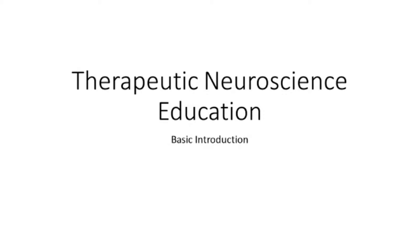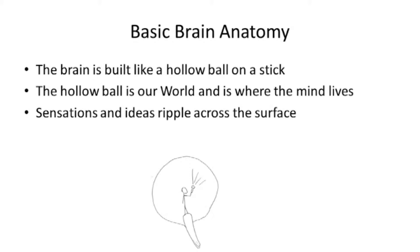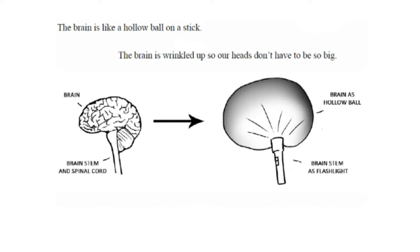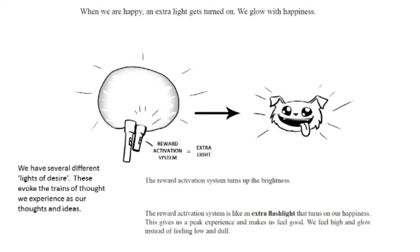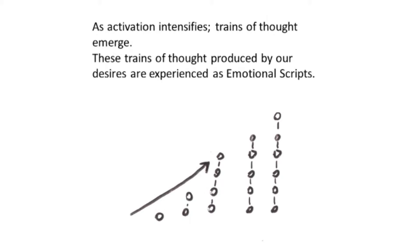The basic perspective of the self is that we're inside this hollow ball of the brain, shining our light of consciousness around, becoming aware of whatever sensations and ideas are rippling across the surface. It's a hollow ball on a stick with several sources of light — ripples spread out across the cortex. As sensations ripple out they become perceptions, and as desires ripple out they become ideas, plans, and fantasies. We experience the interaction between different desires as that internal dialogue of thought.